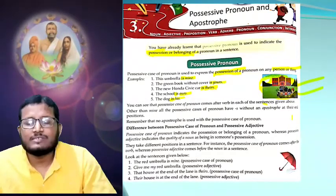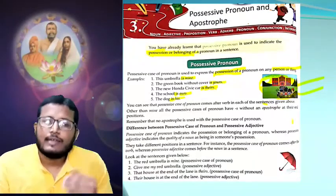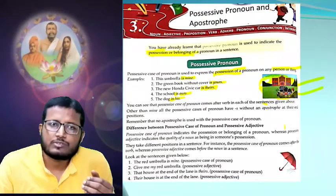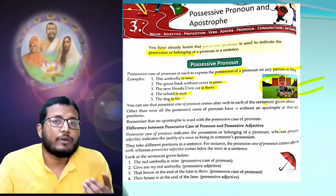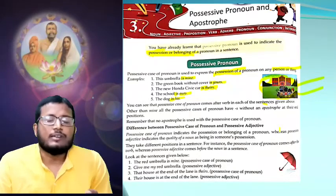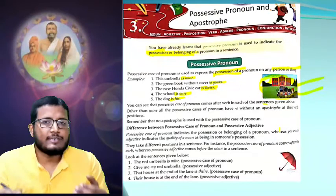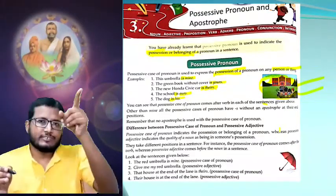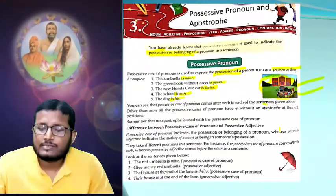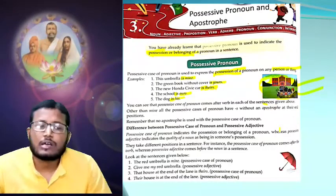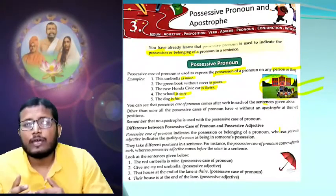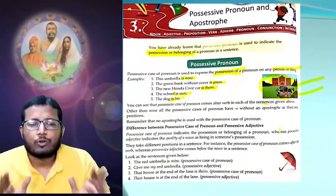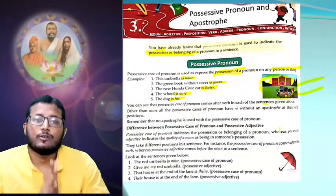Other than mine, all possessive case of pronouns have S without an apostrophe. You can see all the examples have S. Remember: no apostrophe is used with the possessive case of pronoun. What is an apostrophe? Simply take it — one comma should be there overhead. You can see the examples mine, yours, ours, theirs — there may be S but the comma is not there.